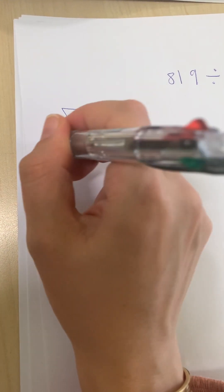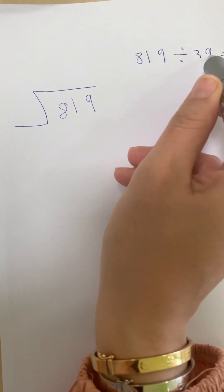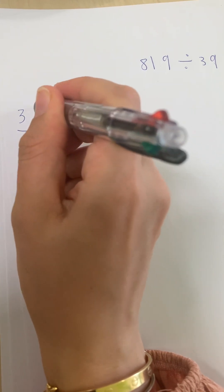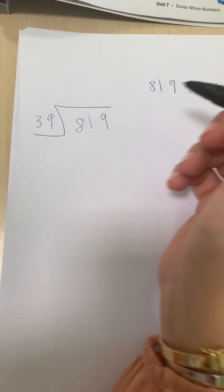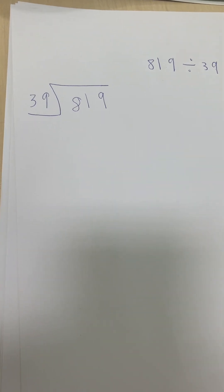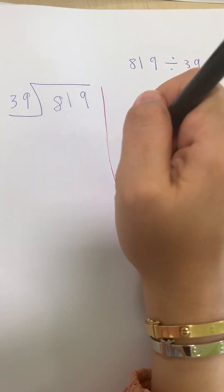The big number here is 819. The small number outside is 39. So we have to guess: How many 39s are there in 819? First I will put a line here.